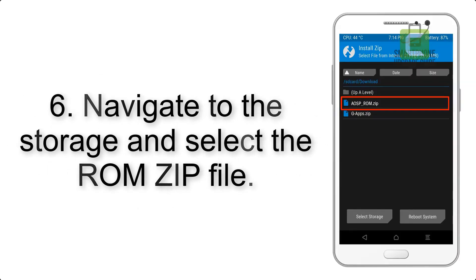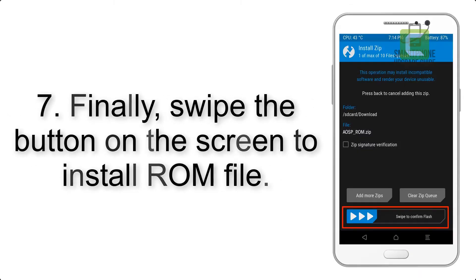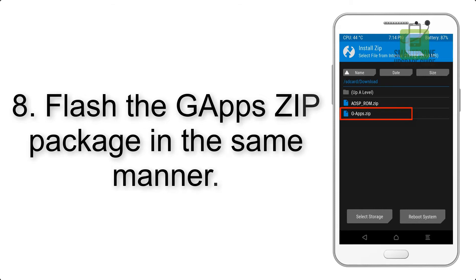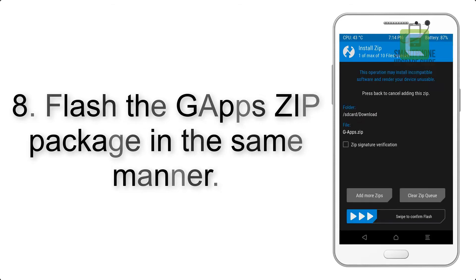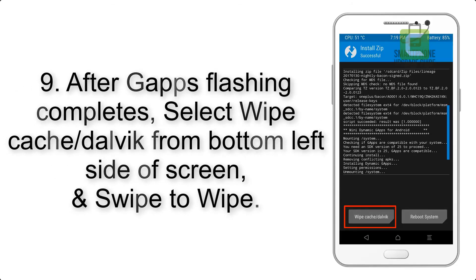Step 6: Navigate to the storage and select the ROM zip file. Step 7: Finally, swipe the button on the screen to install the ROM file. Step 8: Flash the GApps zip package in the same manner.